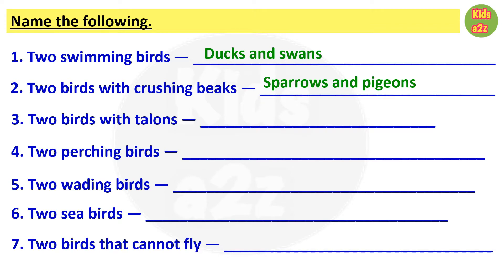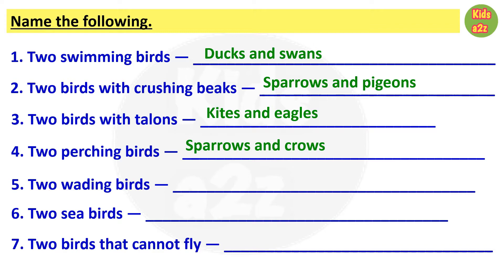Number 3 is 2 birds with talons. Talons means large, curved, strong and sharp claws. So 2 birds with talons are kites and eagles. Number 4, 2 perching birds — examples are sparrows and crows.